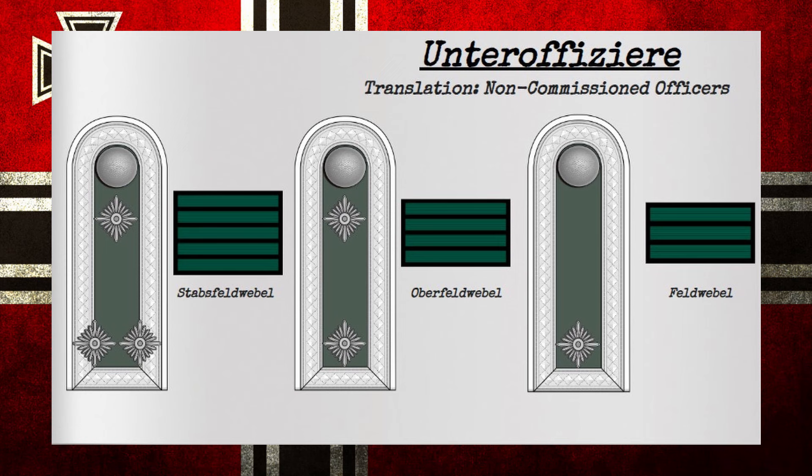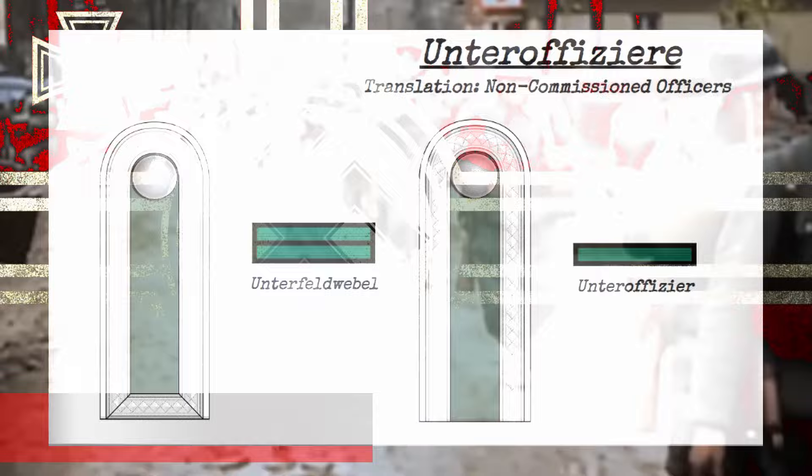The Unterfeldwebel, or Junior Fieldwebel, or Sergeant, was originally called Sergeant in 1921, then renamed. It was an automatic promotion after 6 years of service and 3 years as an Unteroffizier, if not yet advanced to the rank of Feldwebel or Wachtmeister. It could also command a squad of soldiers roughly from 4 to 10 men, although this could change. The Unteroffizier, or Under Officer, was also a sergeant, more comparable to a Junior Sergeant rather than a full sergeant, and held the same command of roughly 4 to 10, maybe 14 men at max.